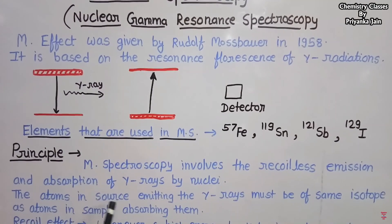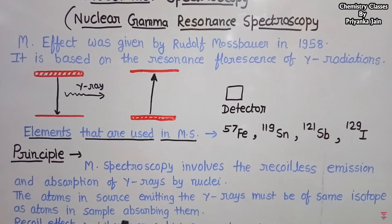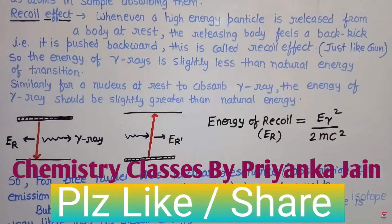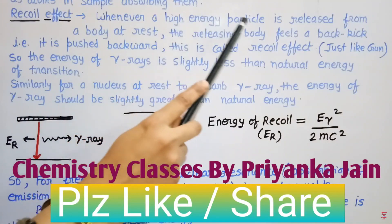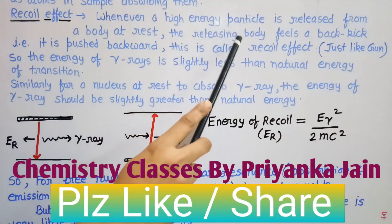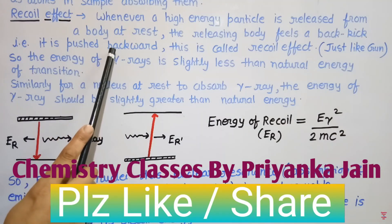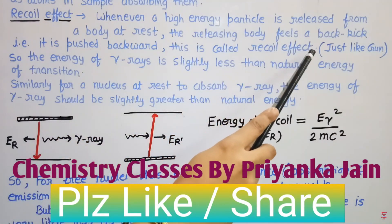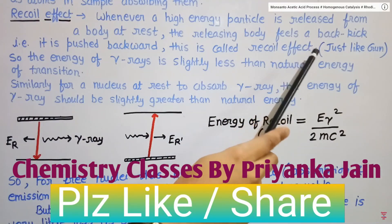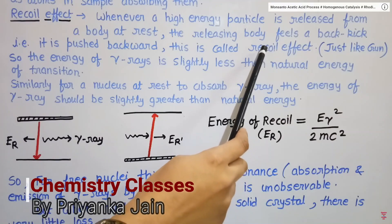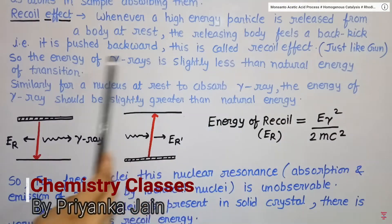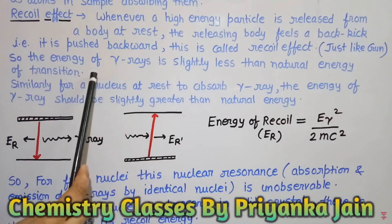The recoil effect: whenever a high-energy particle is released from a body at rest, the emitting body feels a back kick — it is pushed backward. This is the recoil effect, analogous to a gun firing a bullet. In the recoil, some energy is wasted, so the energy of the emitted gamma ray is slightly less than the natural transition energy. Similarly, for a nucleus at rest to absorb a gamma ray, the gamma ray energy must be slightly greater than the natural energy, because energy is also wasted in recoil during absorption. The recoil energy is ER equals E-gamma squared divided by 2mc².